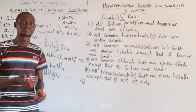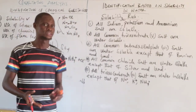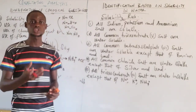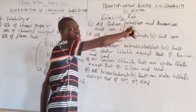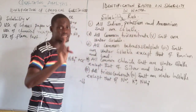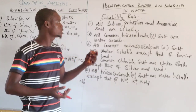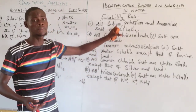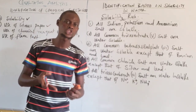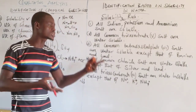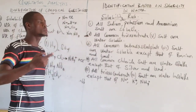So if you dissolve a substance completely in water, you can infer that sodium, potassium, or ammonium is present in that solution — because that is why the substance dissolves in water. Rule number two: all common nitrate salts are water-soluble. Every nitrate will dissolve in water.